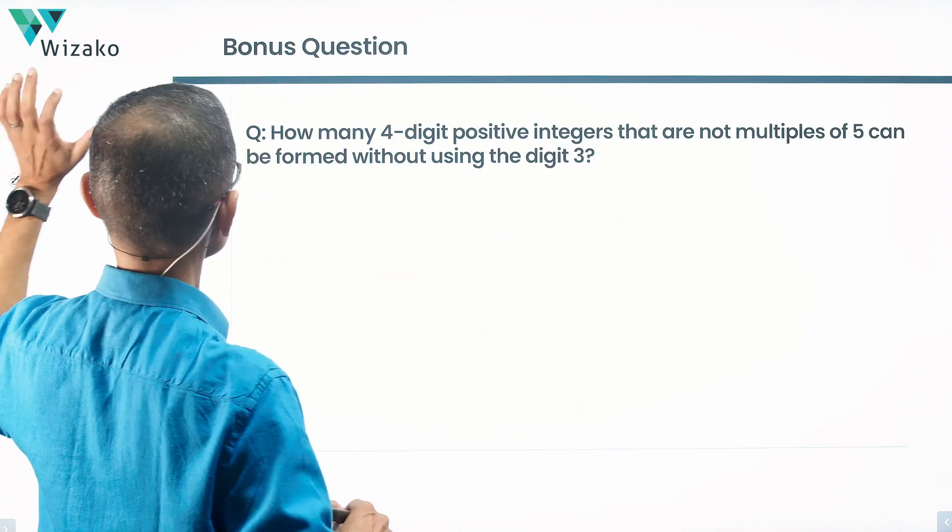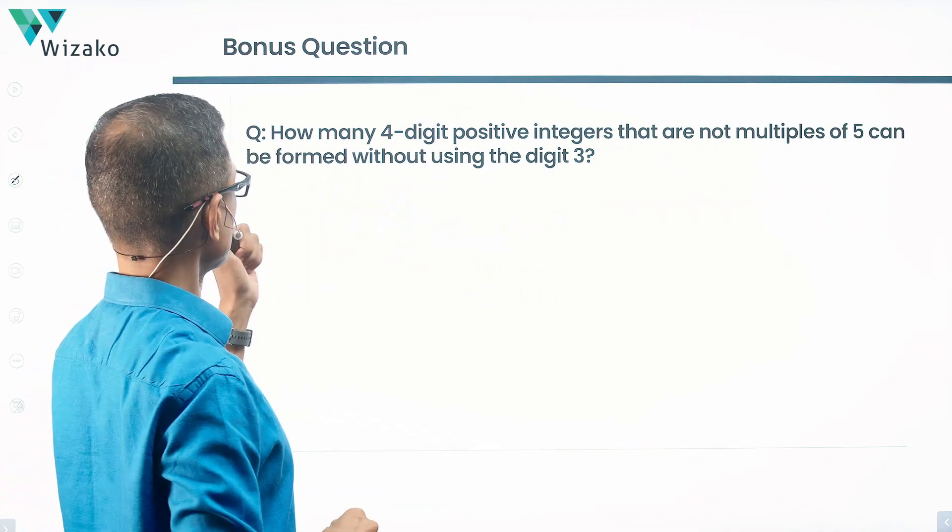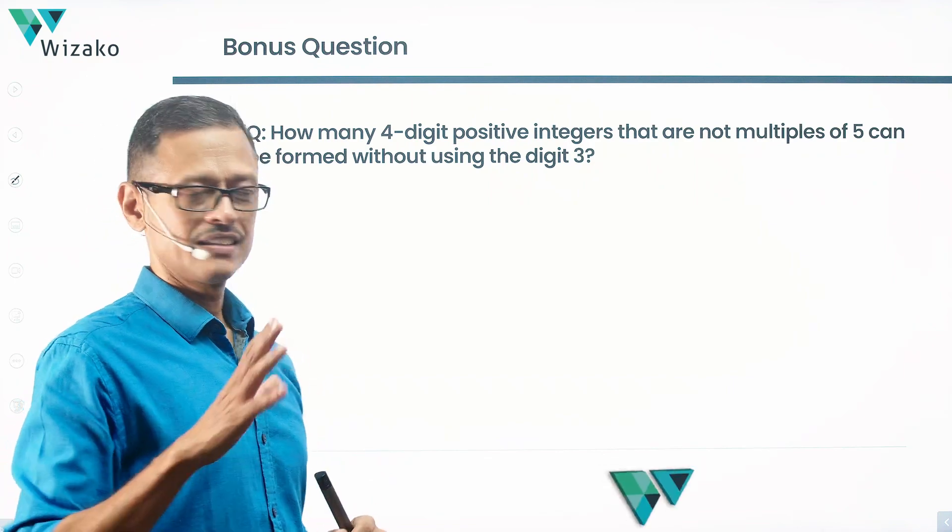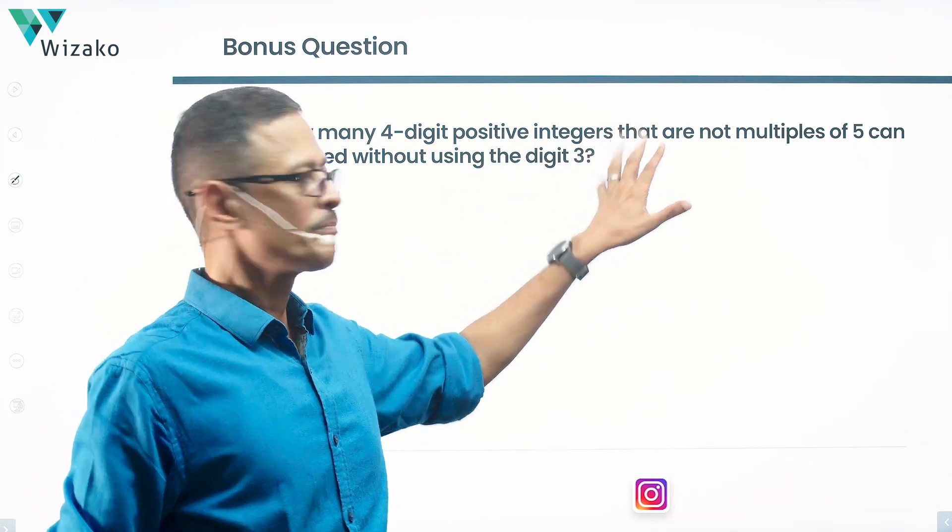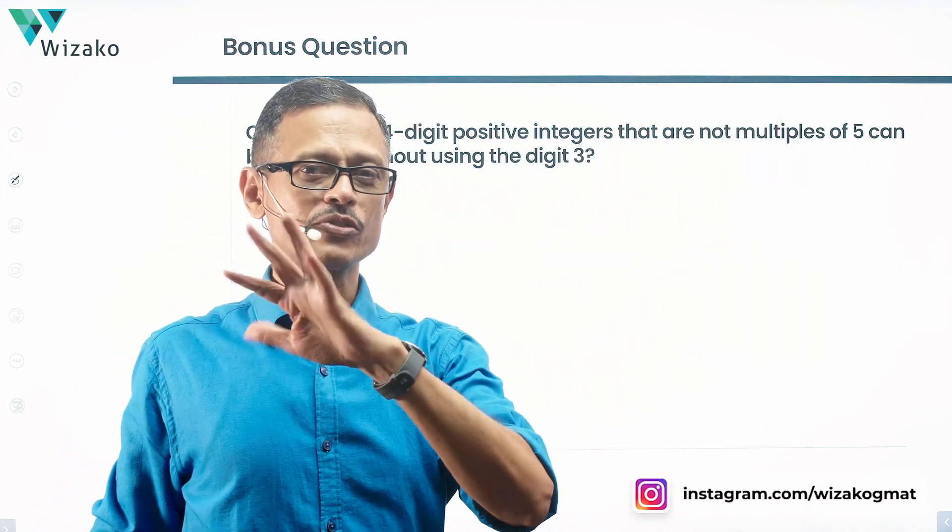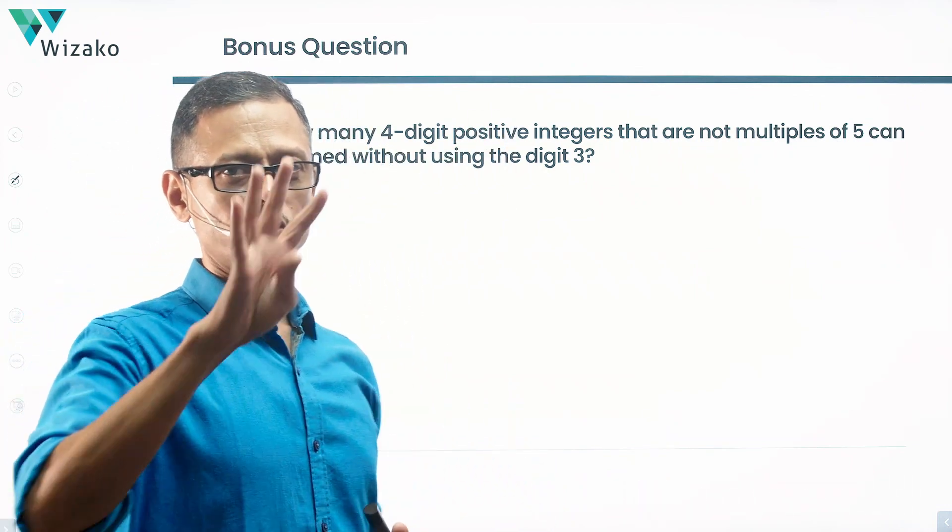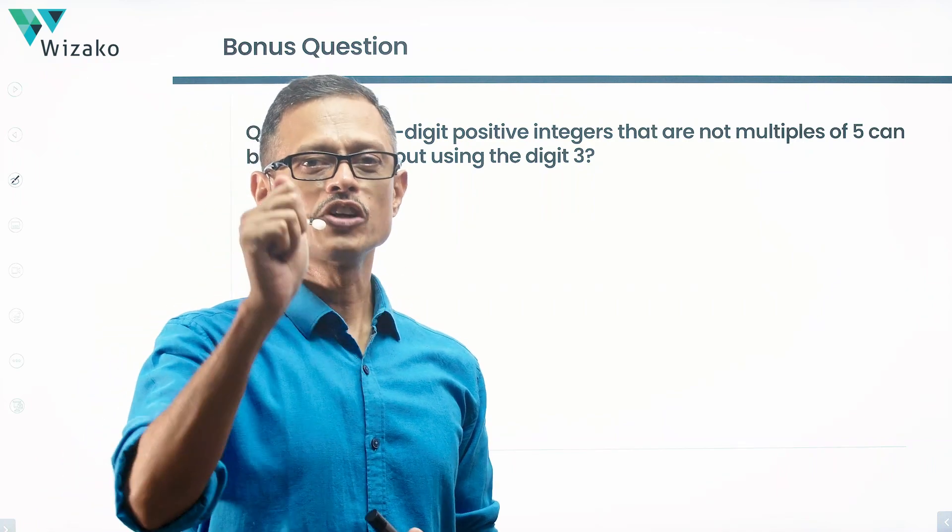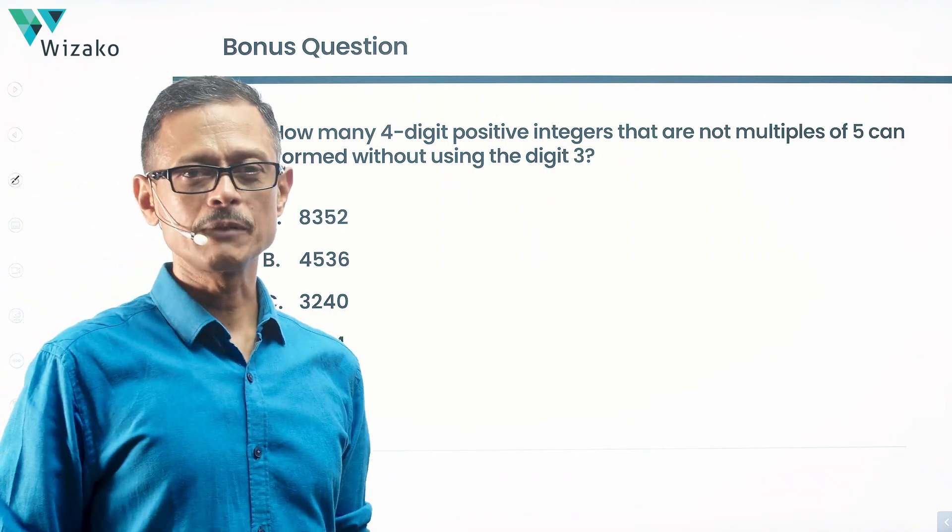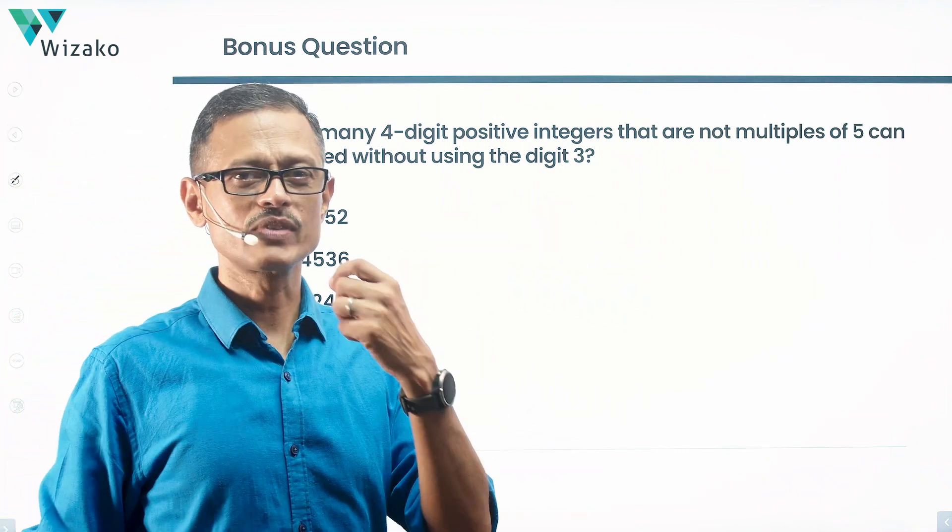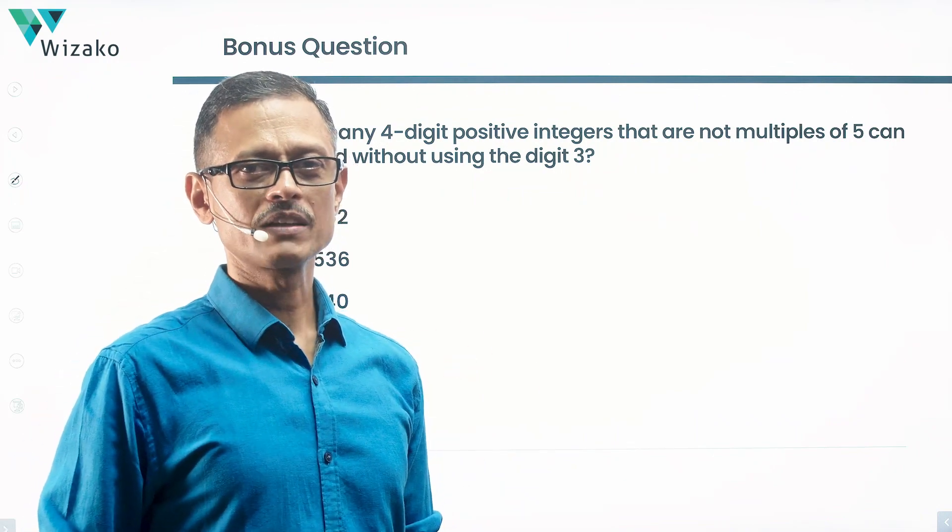We'll have a bonus question for this. The bonus question reads as follows: How many four-digit positive integers that are not multiples of 5 can be formed without using the digit 3? I've removed the odd from it. So how many four-digit positive integers that are not multiples of 5 can be formed without using the digit 3? It should be a four-digit positive integer, should not be a multiple of 5, should not contain the digit 3. Check out which answer option fits the bill. Solve this pretty much the same way as we did in the last question, except that you adhere to a new set of conditions and post your answers in the comment section of this video. Best wishes.